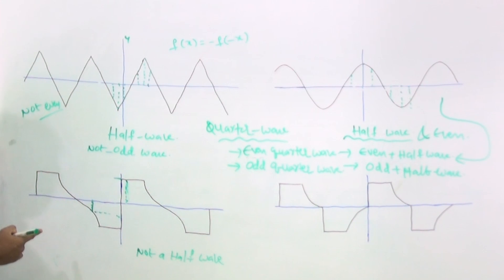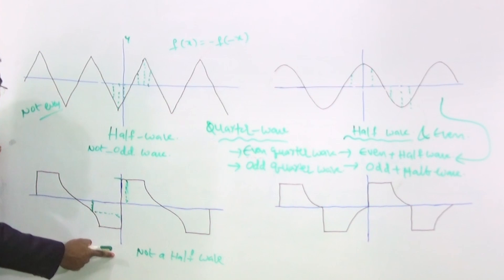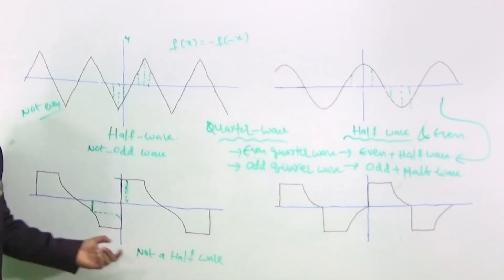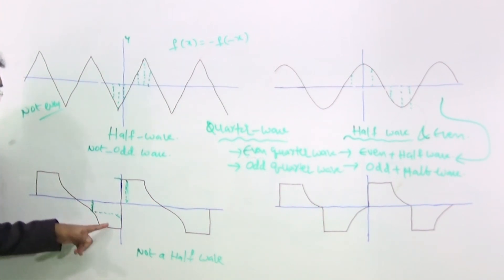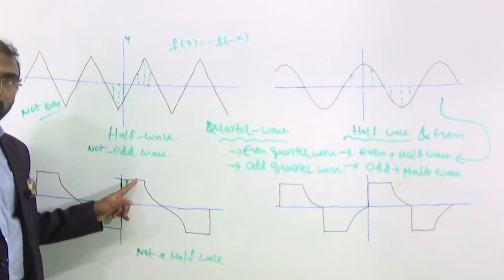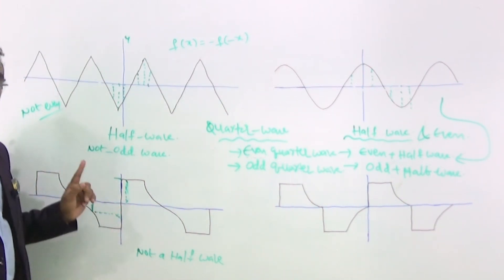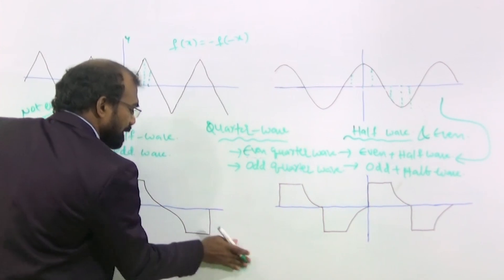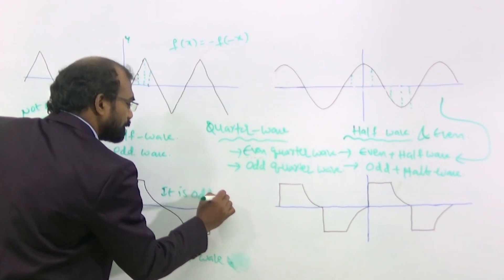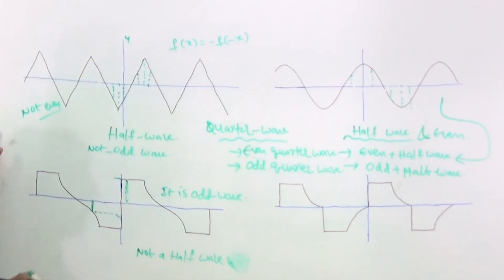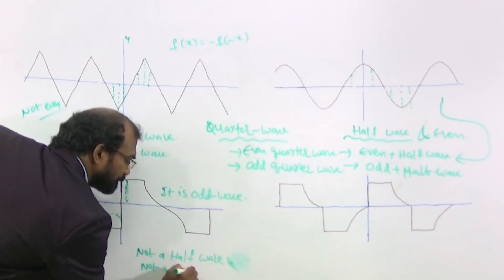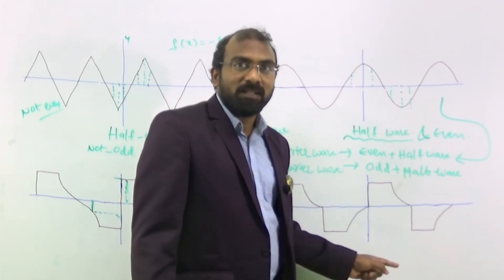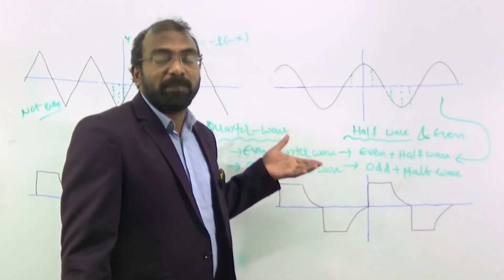Let us verify this. This is first of all not a half wave, so not a quarter wave. Is it even or odd? On the negative x axis side we have the negative part of the curve, and immediately to the y axis on the positive side we have the positive part of the curve. Therefore this is not even, but odd. Not a half wave, but it is an odd wave. And this is also not a quarter wave. What about this? I am not going to say whether it is even or odd — just comment below whether it is even or odd or half wave, and whether it becomes a quarter wave or not.